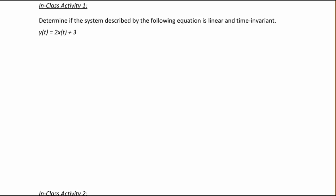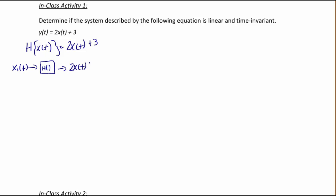Let's look at an example. Determine if the system described by y(t) = 2x(t) + 3 is linear and time-invariant. Another way to write this is that the function acting on x(t) is 2x(t) + 3. So if I have an input x1(t) and it goes through my function h, the output would be 2x(t) + 3.